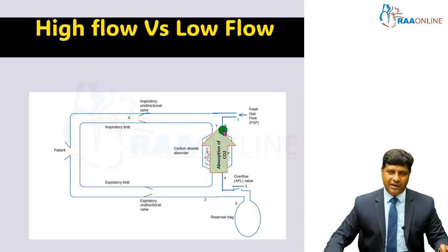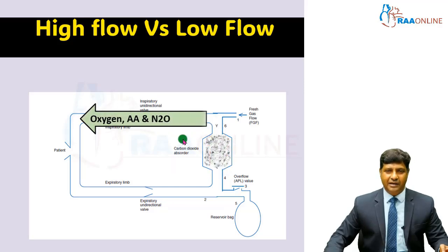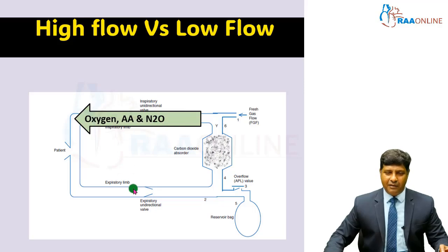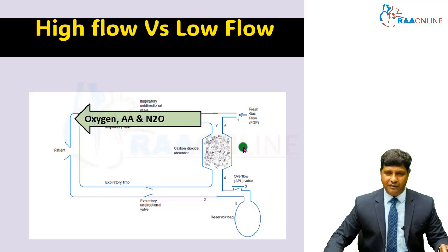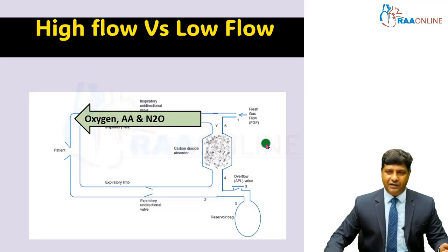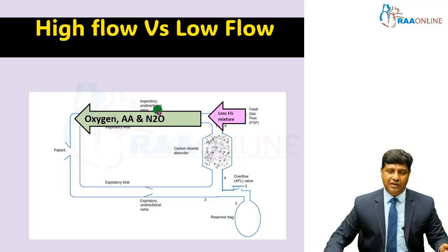After the carbon dioxide is absorbed, the gas reaches back to the inspiratory limb. This gas coming from the expiratory limb through the circle absorber or canister has different characteristics than the gas coming from the fresh gas flow. The volume of the exhaled gases is much higher compared to the fresh gas flow, since the exhaled gas forms the major component and what we need to supply is much less.